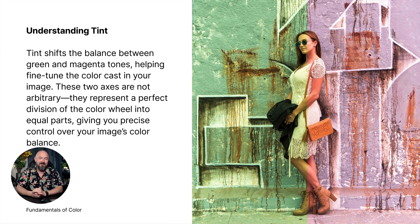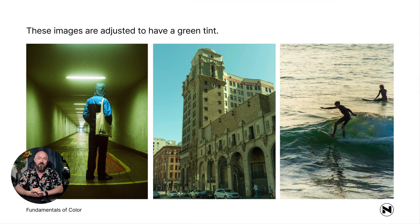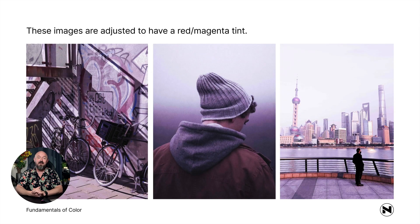Now let's talk about tint, which is the other axis on the LAB color model. Tint shifts the balance between green and magenta tones, helping fine-tune the color cast in your image. These two axes are not arbitrary — they represent a perfect division of the color wheel into equal parts, giving you precise control over your image's color balance. Here you can see images adjusted to have a green tint, and here images adjusted to have a red or magenta tint.